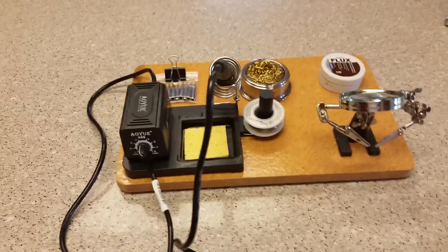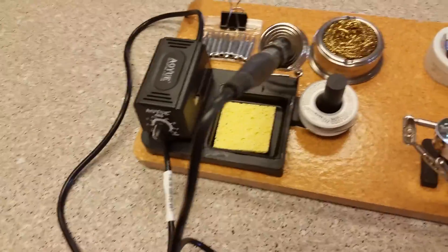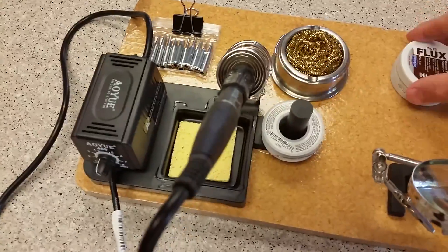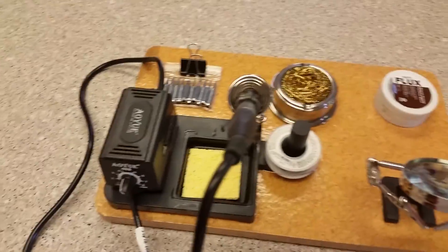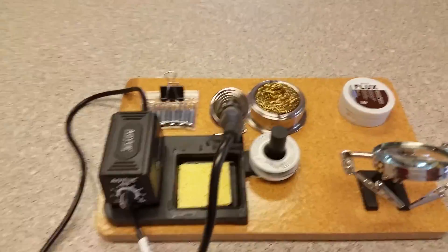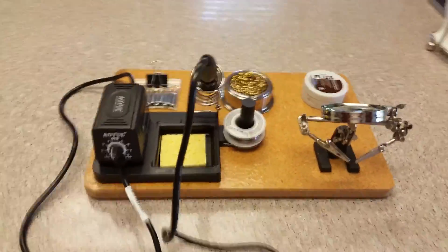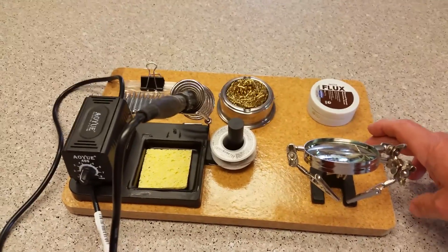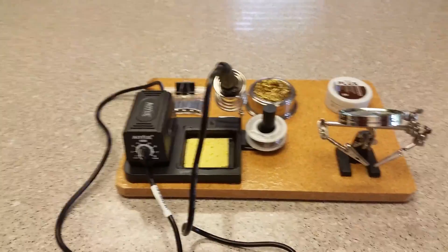When I get ready to solder something I can pull it out, and I won't have to worry about the helping hands or the soldering station moving. Even the flux is right there, glued onto the board, and my bits will be handy. Bottom line is I took a soldering station and created a real soldering station by having all the other tools on the board with it. Hope you find this helpful.